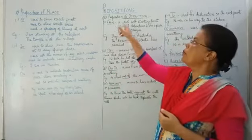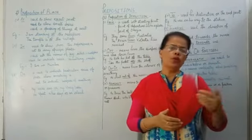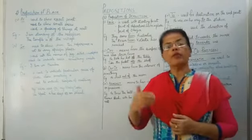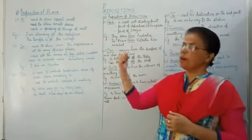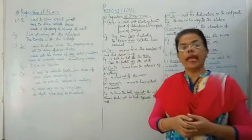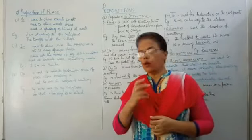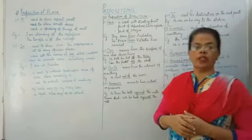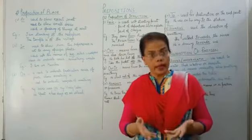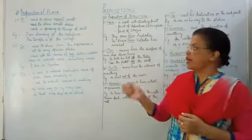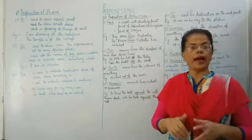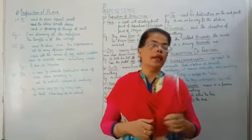Next we come to the preposition of direction. When to use 'to', 'towards', 'from' — these are all very important. 'From' is indicating the origin — where something starts. It indicates place in time also. He is from Mumbai. Second is point of departure — from where something departed. Third is point of origin — where the person or thing belongs to. Example: They came from Australia. The train from Kolkata has reached.